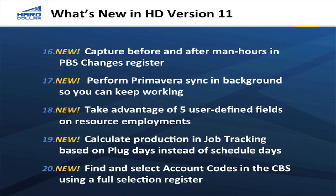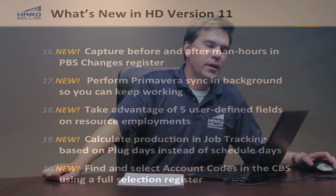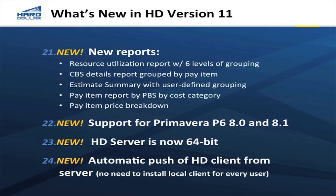We've made it quite a bit simpler to search and find account codes. As you're looking for an appropriate cost code or account code for an item, that's easier than ever using find and search functions. And then lastly, we have created quite a few new reports: some new resource utilization reports, new grouping on our CBS detail report, an estimate summary report where you can define how you want things grouped and rolled up, some new pay item reports and price breakdown reports that give you great visibility into the cost model and new ways to present your estimates and proposals to your customer.